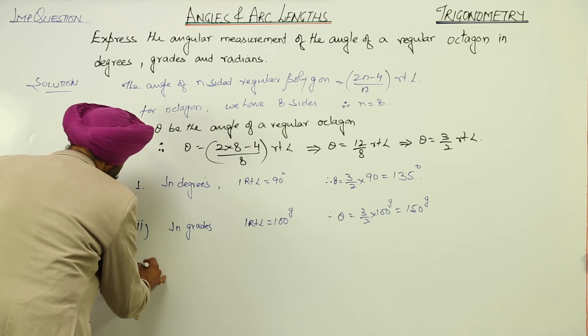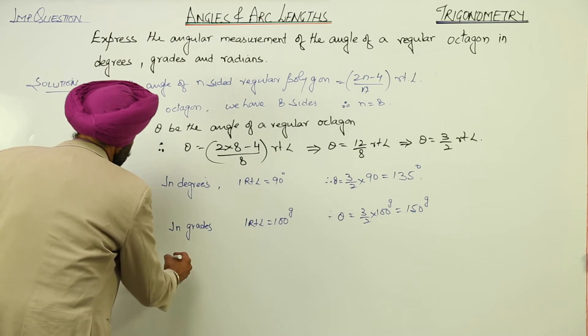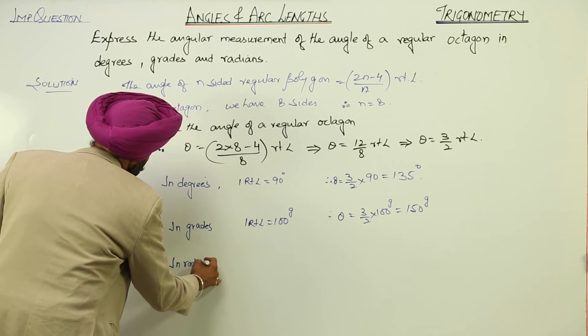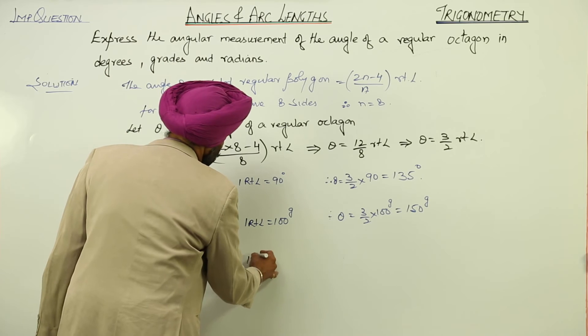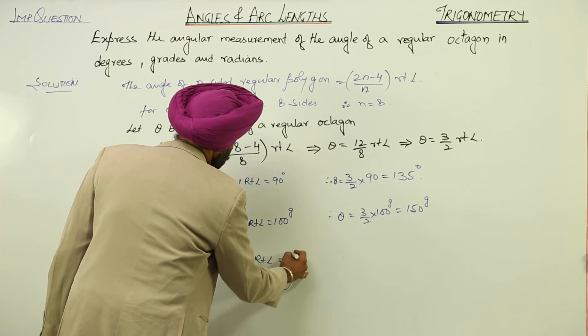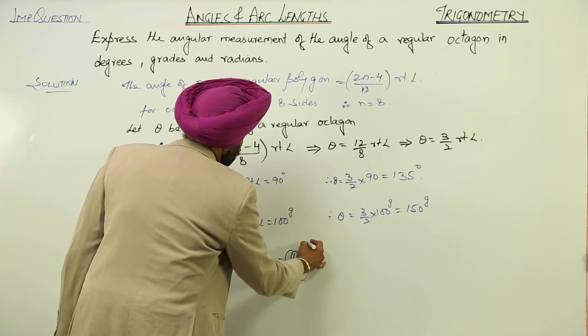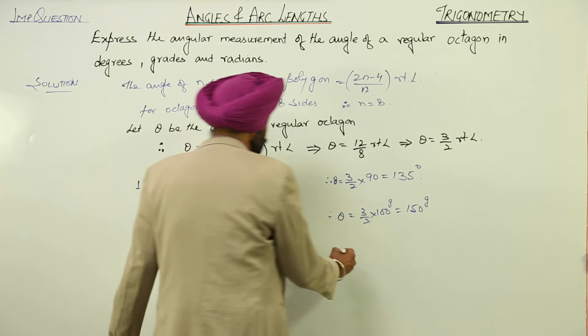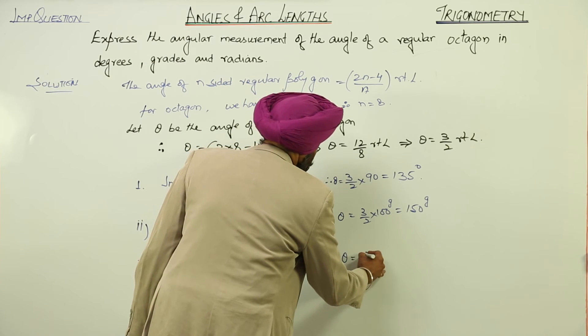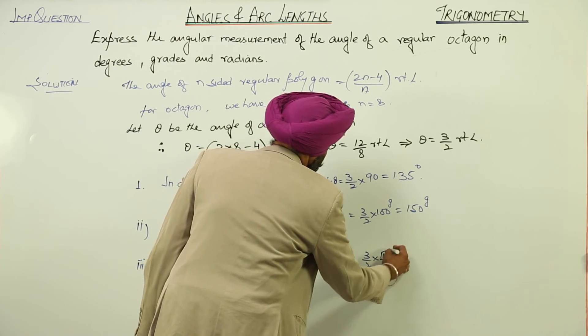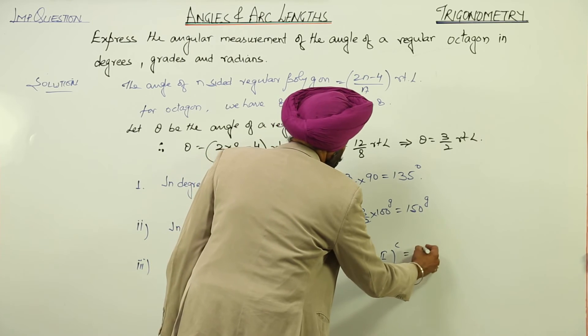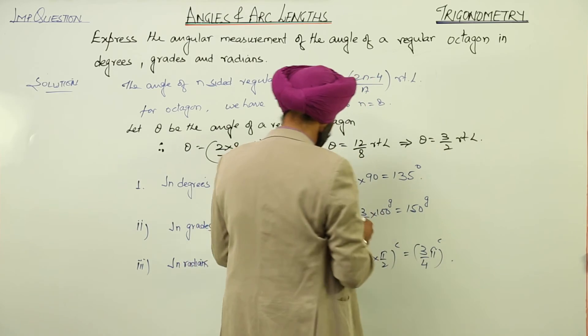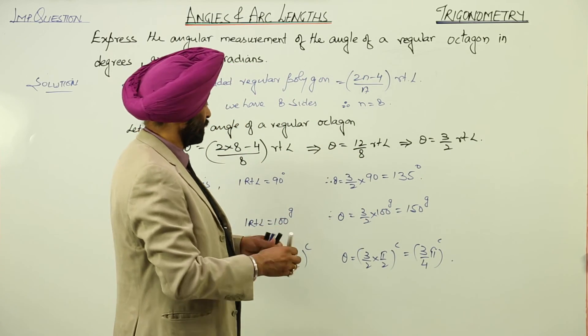Number 3, that is in the radians. Now, in radians, 1 right angle is equal to pi by 2 radians. That is, C is in the circular form. Theta is equal to 3 by 2 into pi by 2. This is equal to 3 by 4 pi.